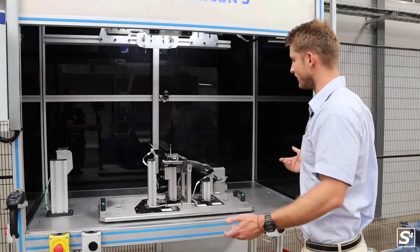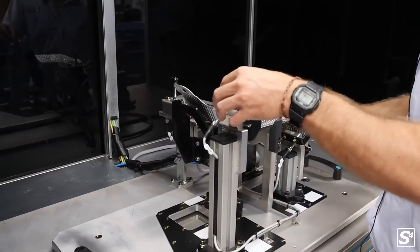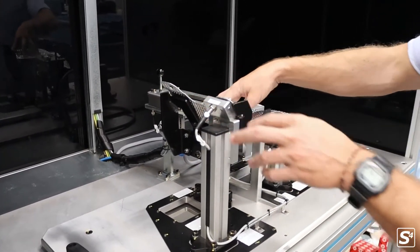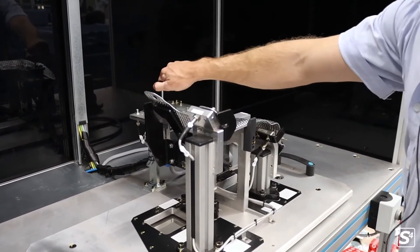The process is that the operator places the heat shield into the respective jig. They will then come and lock the part out for process security.